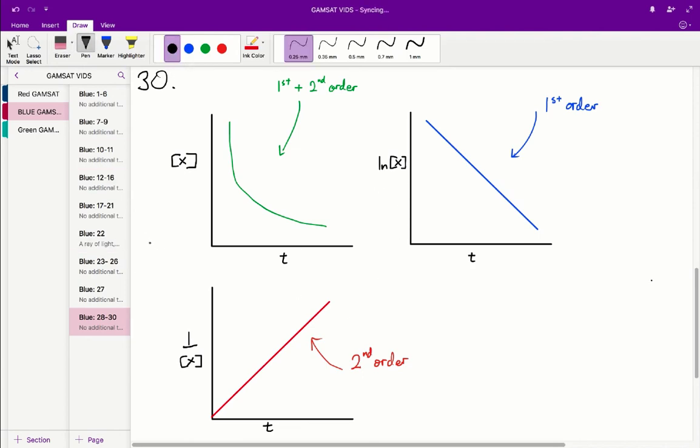The answer for question 30 is therefore C. As we are describing a first order reaction, and this graph is the one that is representative.